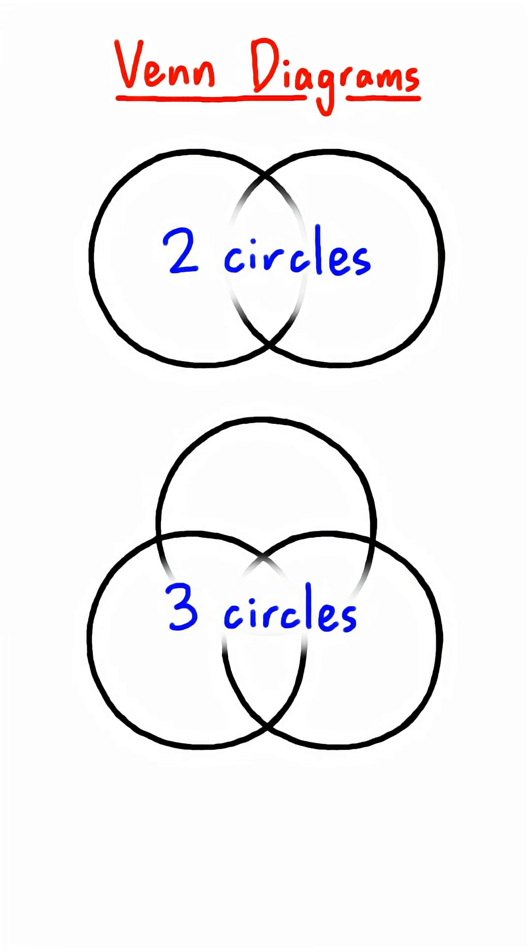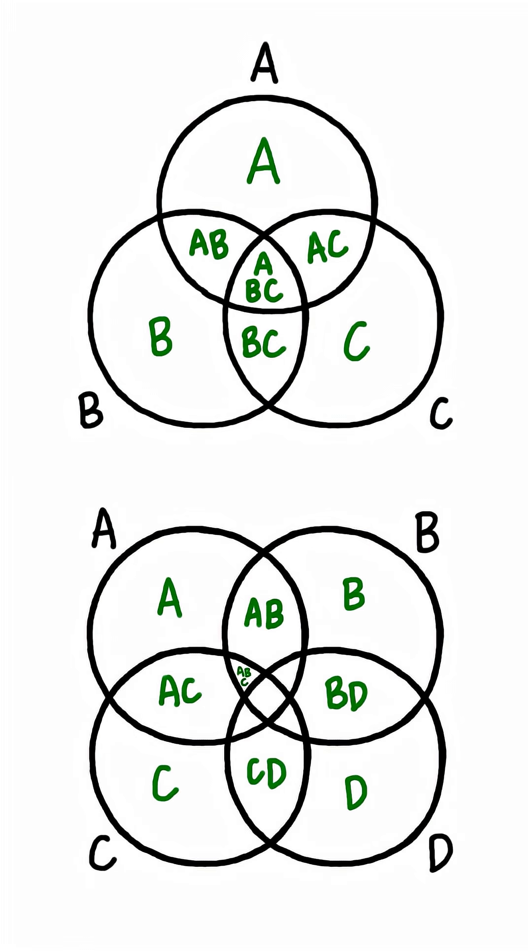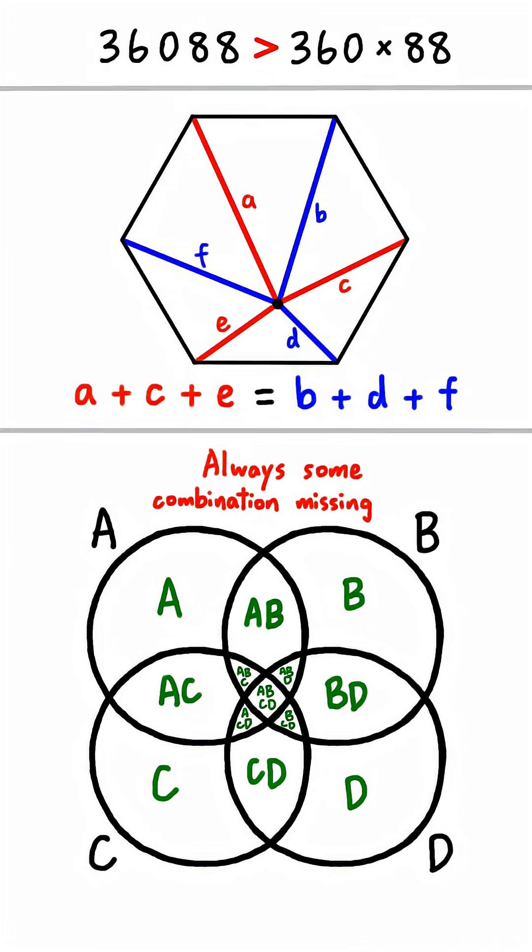Third fact: a Venn diagram using four circles is mathematically impossible. With three circles, you can find any combination of letters, but with four circles, there will always be some combinations missing no matter how you arrange the circles. Pause now to think about which fact is fake.